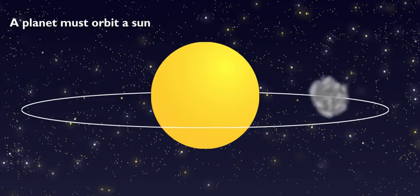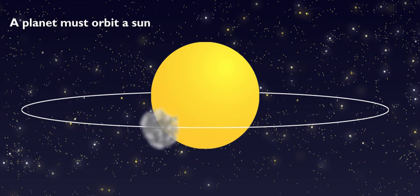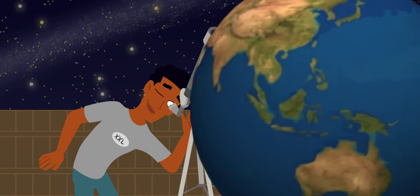One, it must orbit a sun. Two, it must have enough mass for its own gravity to shape it into a sphere, just like the Earth. And three, it must be massive enough to clear objects from its orbit.